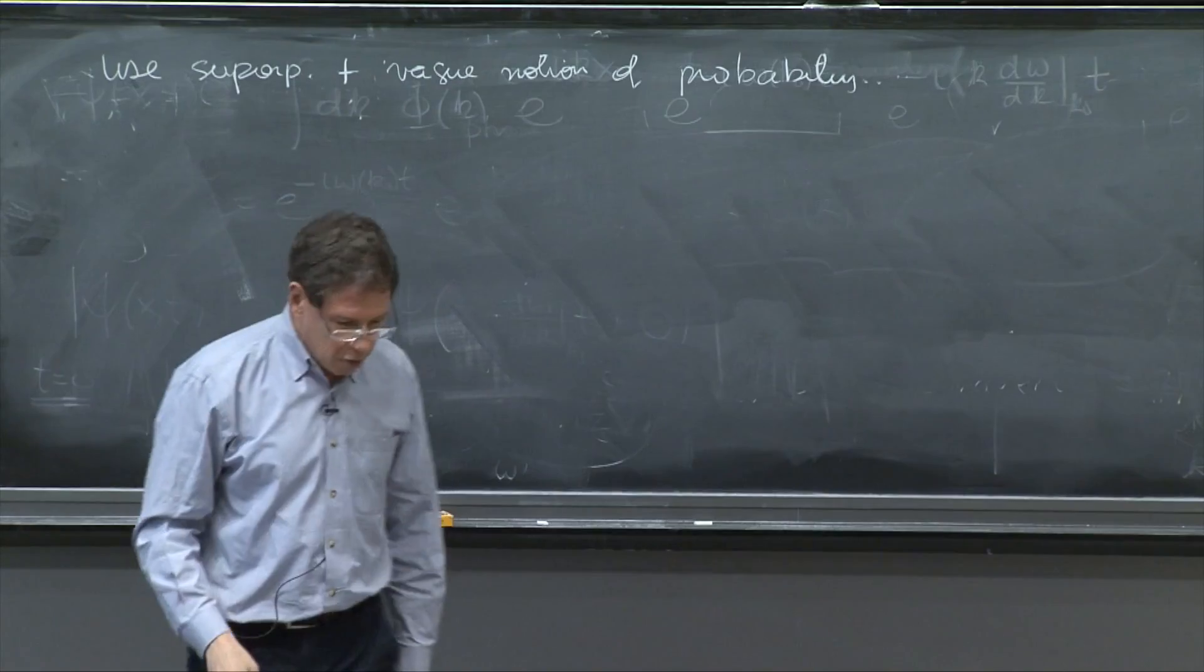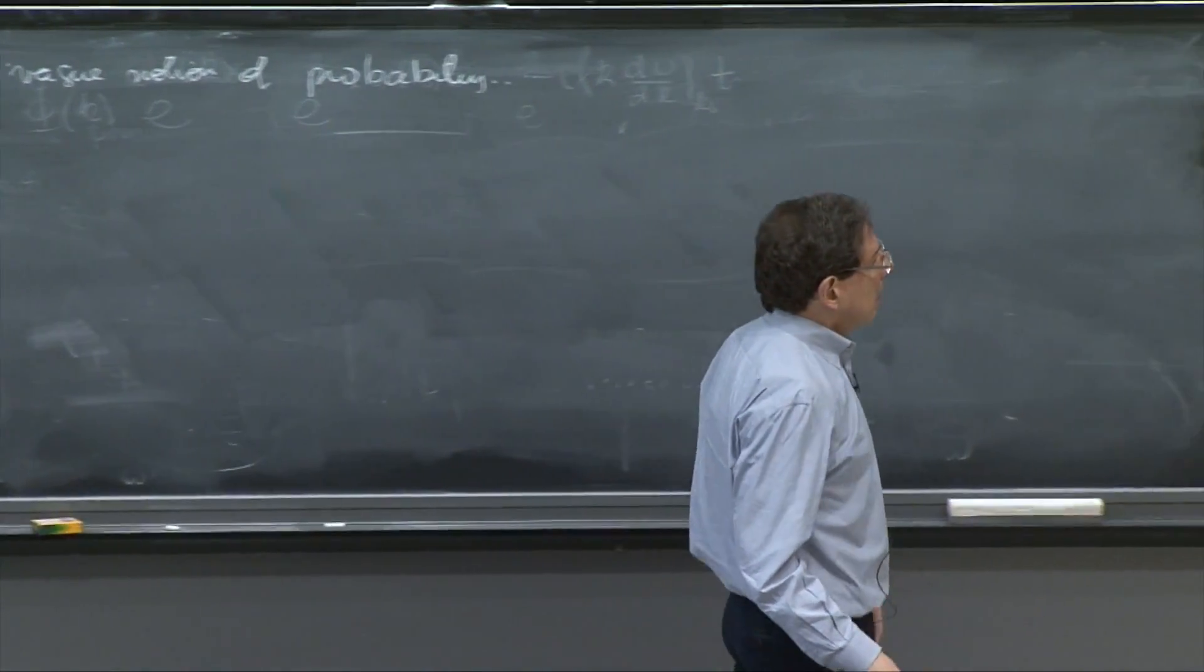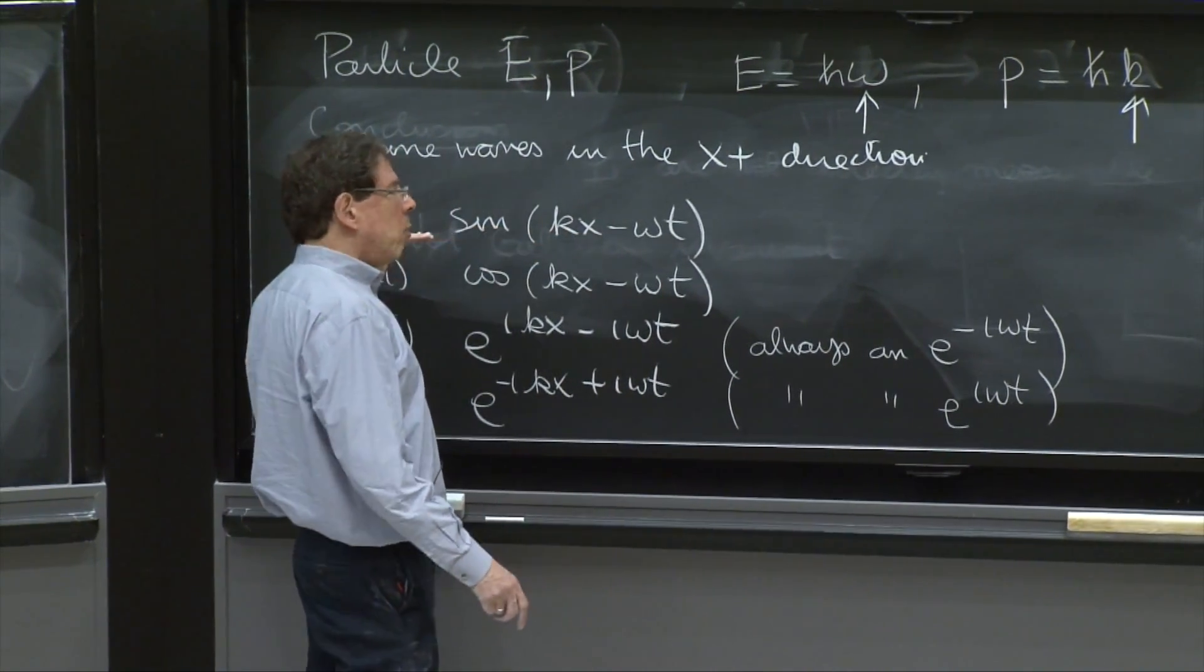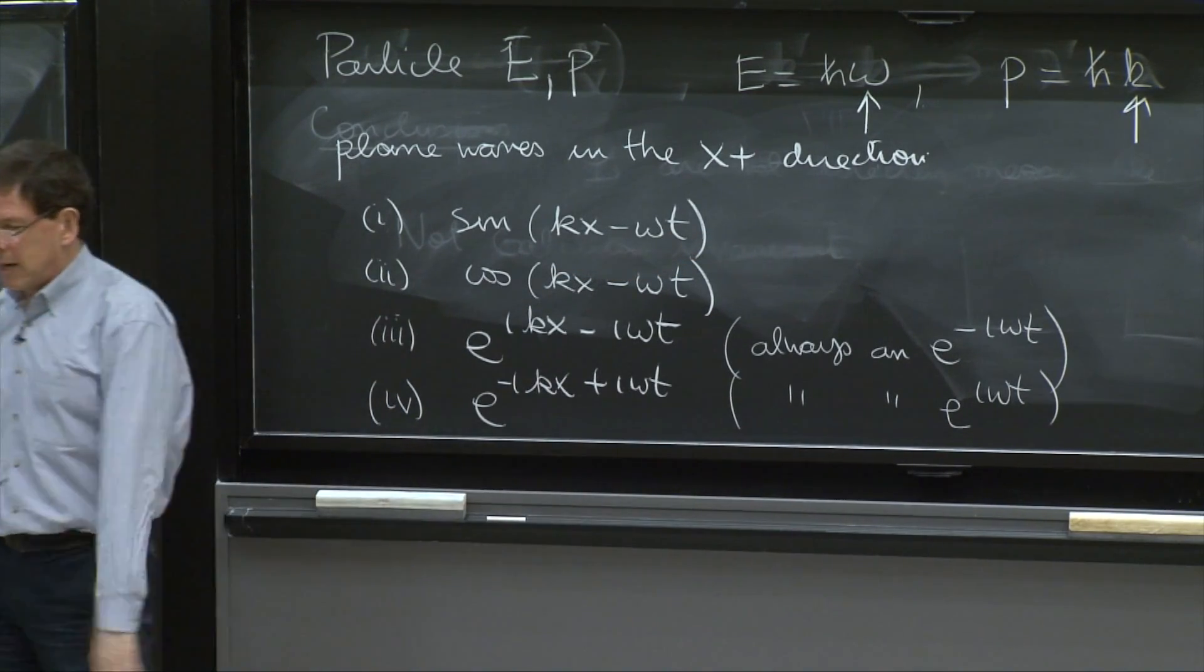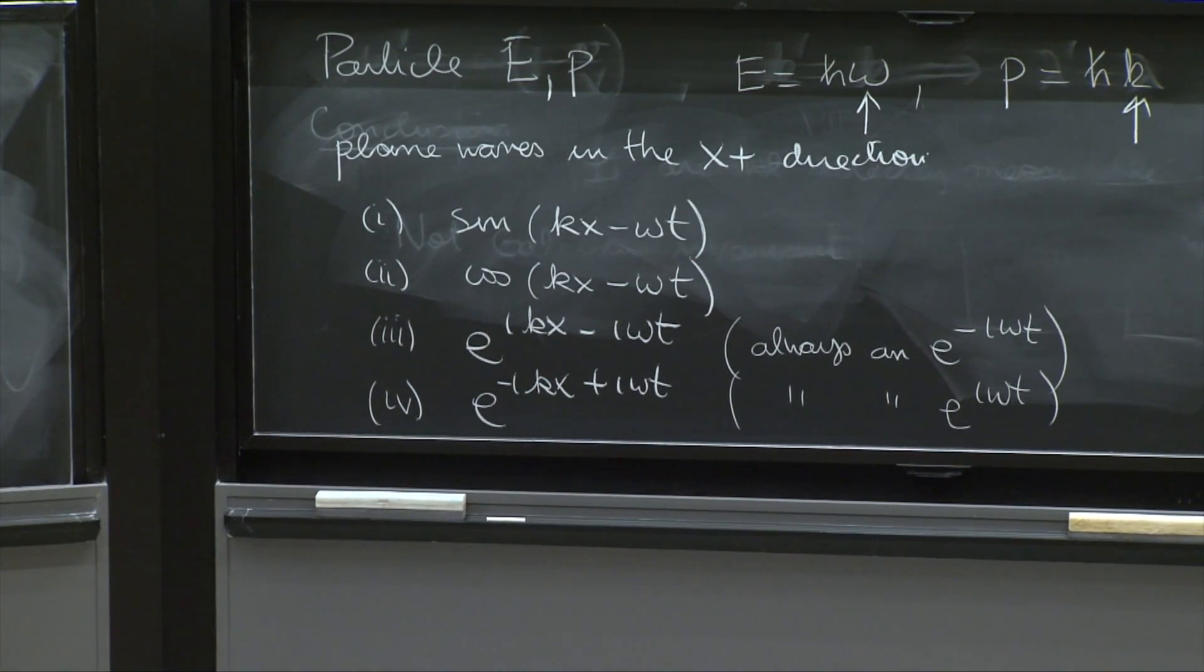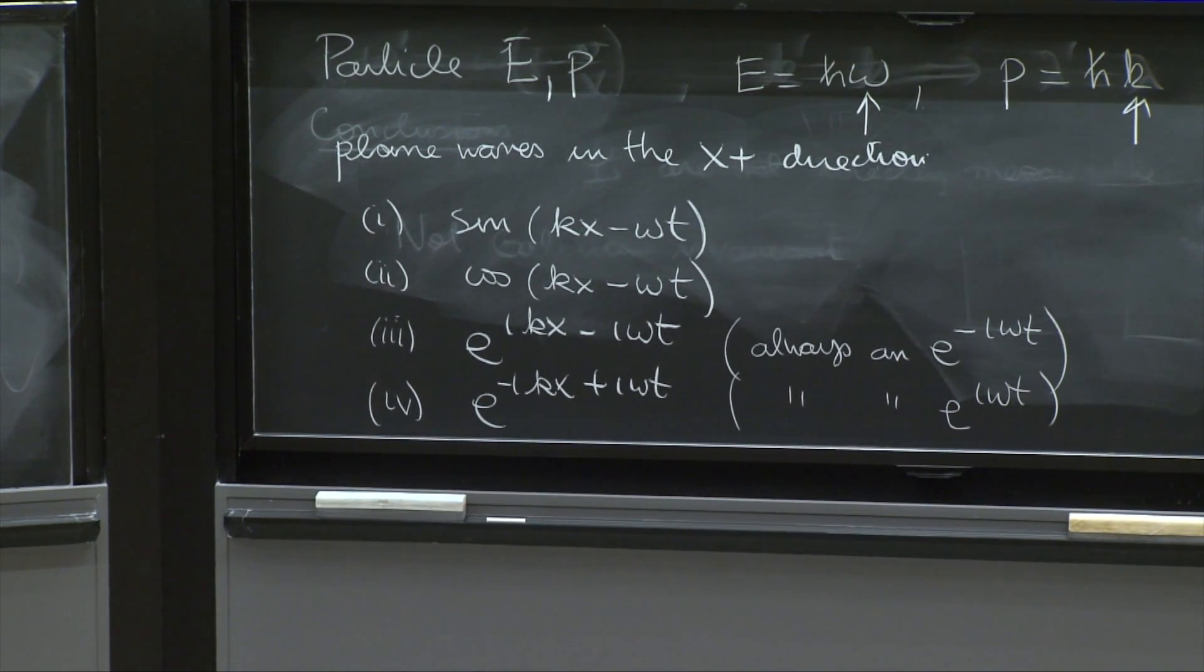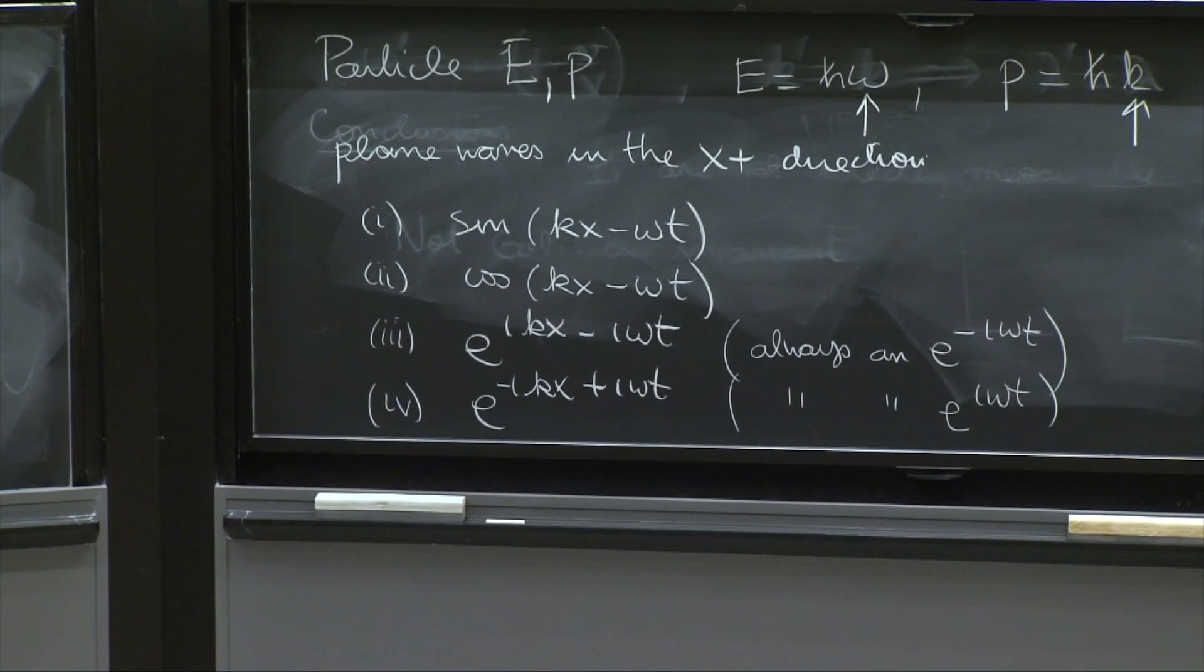So I'm going to try to produce, with these waves, a state of a particle that has equal probability to be moving to the right or to the left.